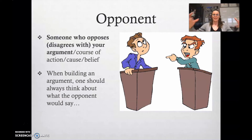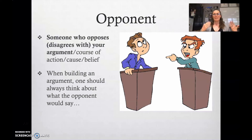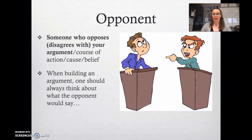An opponent is someone who opposes or disagrees with your argument — it's the person on the other side. You say uniforms are beneficial; your opponent would say no, uniforms are not beneficial. When building an argument, especially a written one, you should always think about what would the opponent say and how would my opponent respond to what I'm saying right now.